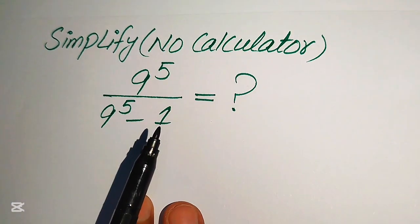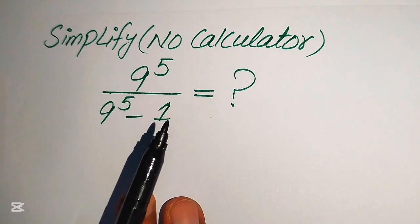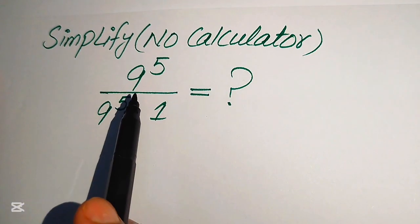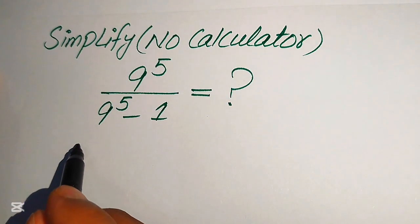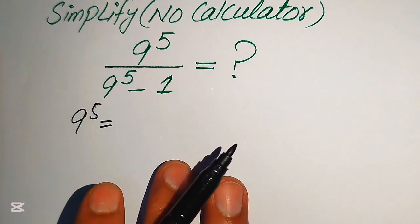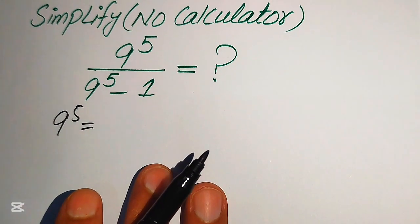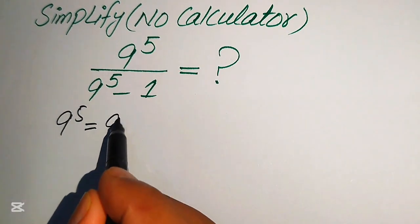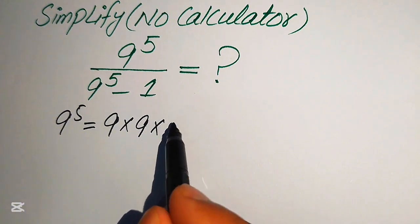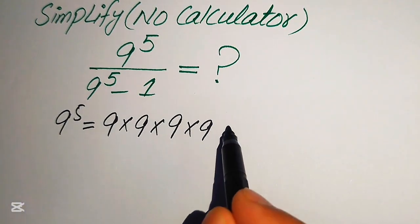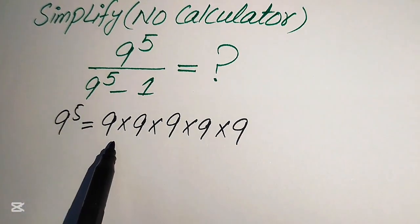The very first step is to find the value of 9 to the power of 5. We will focus on computing 9 to the power of 5. As we already know, 9 to the power of 5 means we need to multiply 9 by itself 5 times — so 9 × 9 × 9 × 9 × 9.